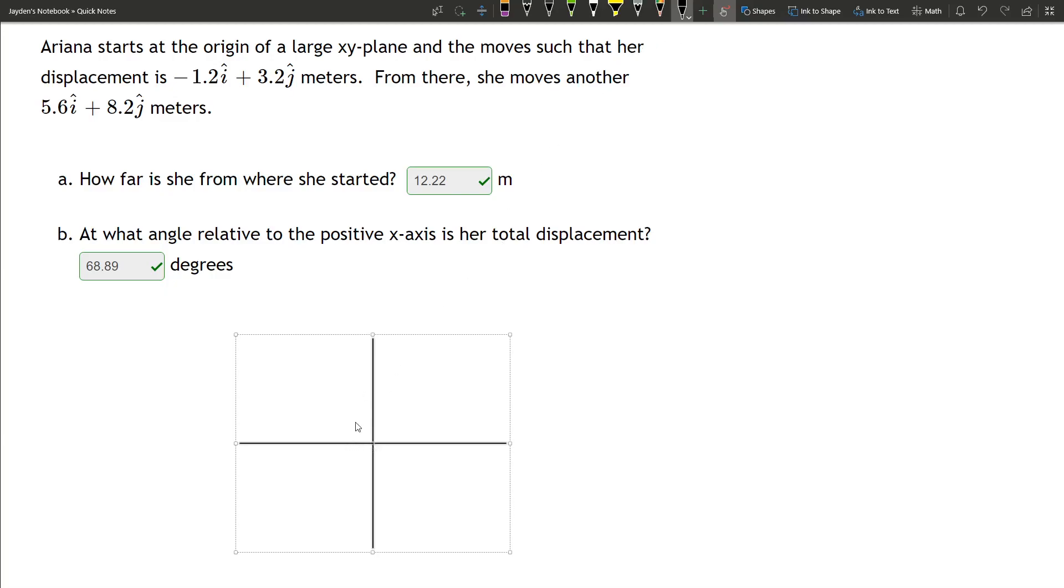It'd go up 3.2j. This is our first vector. And then from there, from this point, 5.6i and up 8.2j.